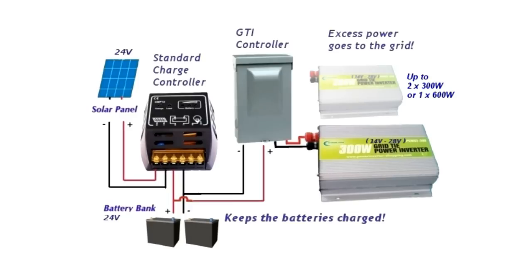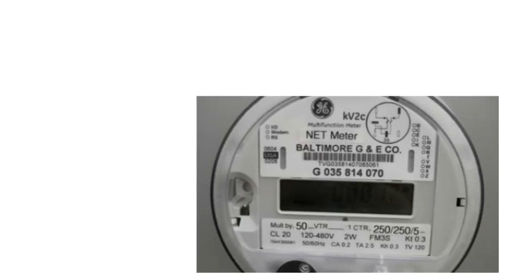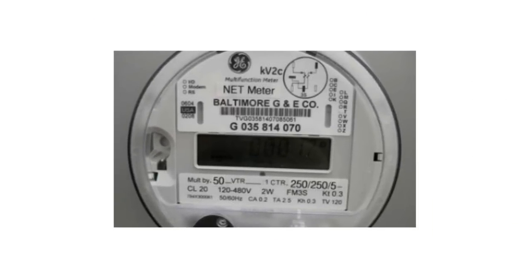In other words, a grid-tie inverter can become the central component of a PV system. The advantage of using a grid-tie inverter is that it can feed excess electricity to the grid and take advantage of net metering. Grid-tie inverters are more expensive because of this additional functionality. Grid-tie inverters can also be used without batteries.